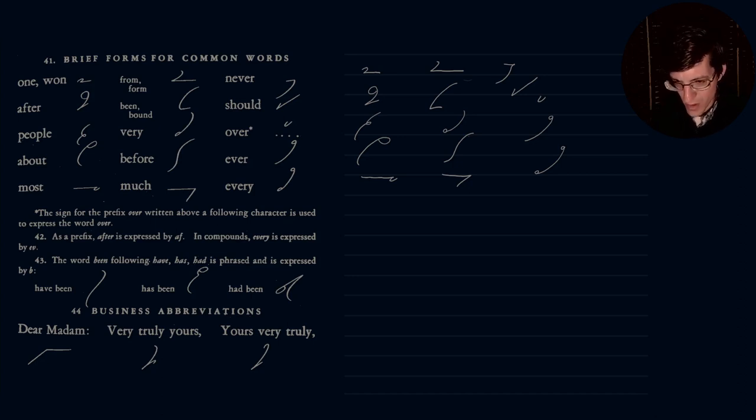Okay, and what are the notes here? On 42, as a prefix, after is expressed by AF. So if it's a prefix for, let's say, the word afterward or aftermath, so if it's a prefix, then it is simply shown by AF. AF. So not after AF. Okay. In compounds, every is expressed by EV. So compounds like everywhere, my mind is drawing a blank right now, but I'll let you come up with the compounds. Anyway, every, if it's in a compound, is displayed as EV. Okay.